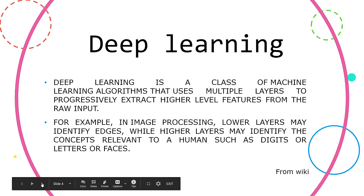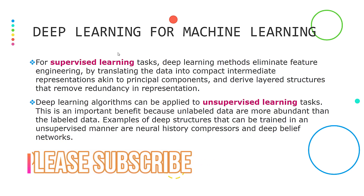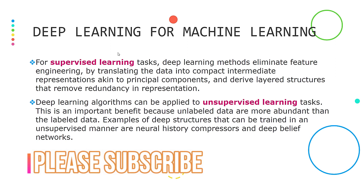Deep learning is a heading for machine learning. We have deep learning and a few data sets and machine learning. For Supervised Machine Learning and Unsupervised Machine Learning, there are two types. We use Supervised Learning and Unsupervised Learning tasks and Clustering Techniques. Deep learning also uses Supervised Tasks. We use classical machine learning algorithms with UCI data.